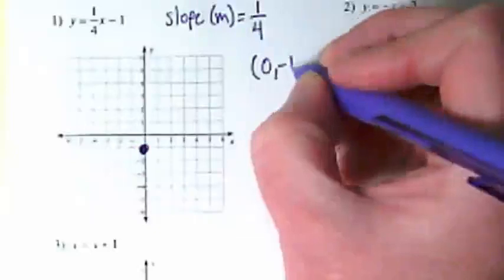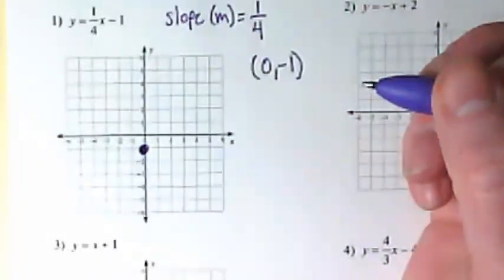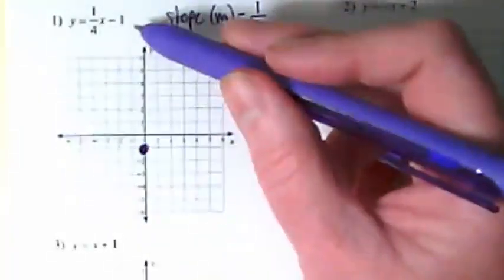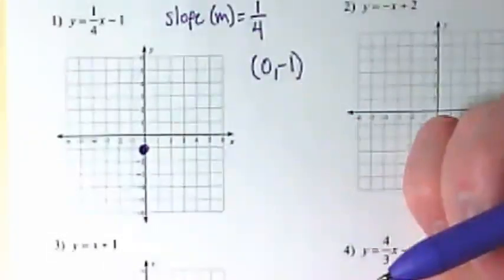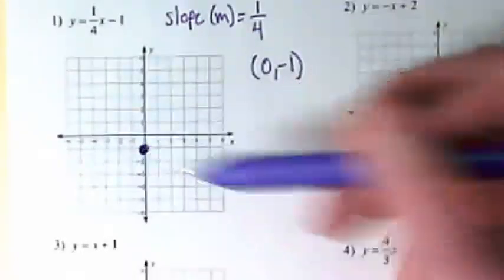Our goal is to get at least two points on this graph so we can draw a line between them, and that way we can make the graph of this equation. We're going to use our slope and this point to find the other one.